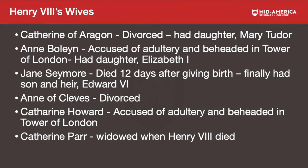We can't continue without talking about Henry the Eighth's wives, because upcoming issues in the English Reformation deal with the children produced from these unions. The six wives are: Catherine of Aragon, who was divorced — they had a daughter, Mary Tudor, nicknamed Bloody Mary. Next is Anne Boleyn, the second wife, who was accused of adultery and beheaded in the Tower of London. This union produced Elizabeth the First.